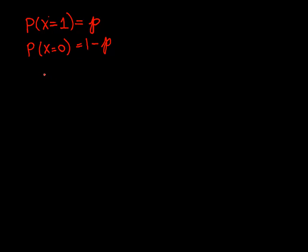Now, the expectation, remember, is the sum over all the possibilities. In this case, we're just going from 0 to 1 of the value times the probability.